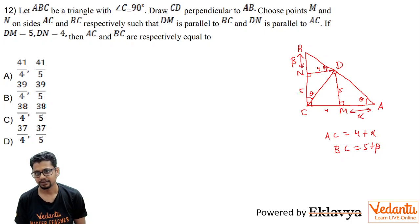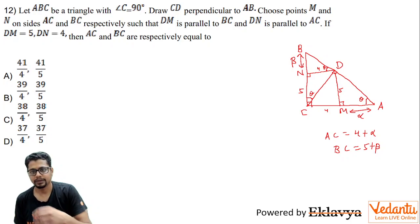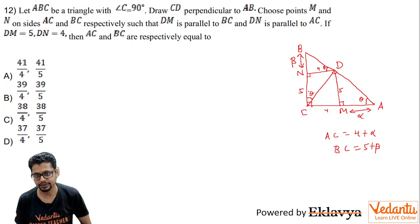Very easy—theta, theta. Because DN and AC are parallel. Since CD is perpendicular to AB, if this is theta, this is 90 degrees minus theta. I hope you are able to see my cursor. And if you consider triangle CND, this angle will be theta. I've just repeated myself so that it is very clear.